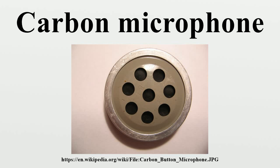Carbon microphones can be used as amplifiers. This capability was used in early telephone repeaters, making long-distance phone calls possible in the era before vacuum tube amplifiers. In these repeaters, a magnetic telephone receiver was mechanically coupled to a carbon microphone. Because a carbon microphone works by varying a current passed through it, instead of generating a signal voltage as with most other microphone types, this arrangement could be used to boost weak signals and send them down the line. These amplifiers were mostly abandoned with the development of vacuum tubes, which offered higher gain and better sound quality.